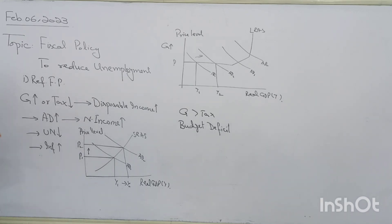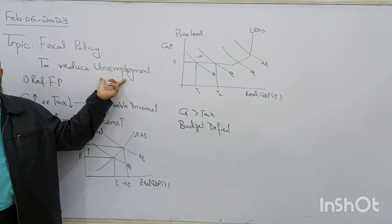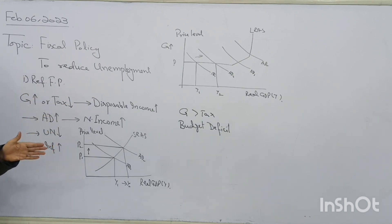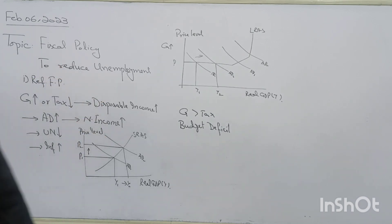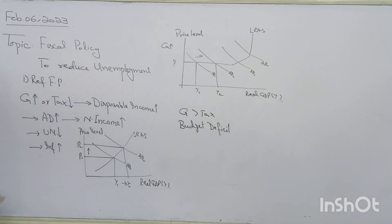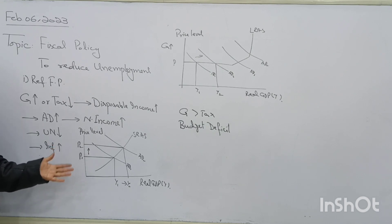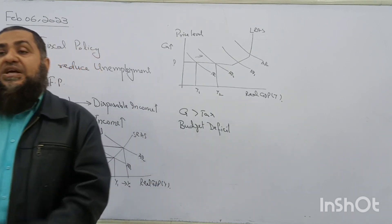If the government's aim is to reduce inflationary pressure, it does the opposite — a deflationary or contractionary fiscal policy is designed. Government spending falls and taxes increase. When taxes increase, disposable income of people decreases, aggregate demand falls, and the process of rising prices reverses. However, this comes at the cost of unemployment — when aggregate demand decreases, unemployment also rises. Also, because taxes exceed government spending, a budget surplus will result.